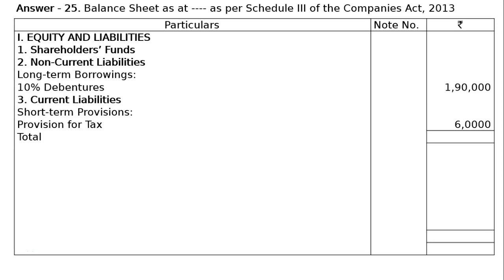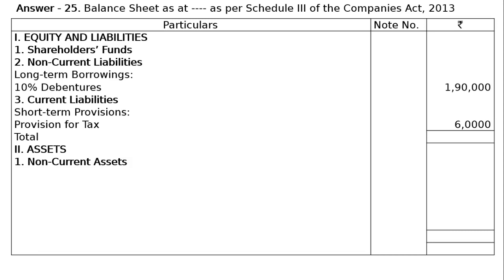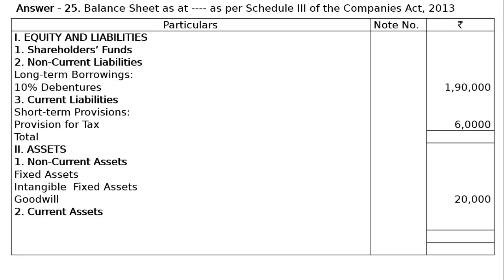Totaling the balance sheet is not required because share capital is not given. Next, under assets, we will have non-current assets and fixed assets. Tangible fixed assets are not there; intangible fixed assets — that is goodwill — rupees 20,000. Under current assets, inventories — that is stock in trade — rupees 40,000. The total of the balance sheet is not required.